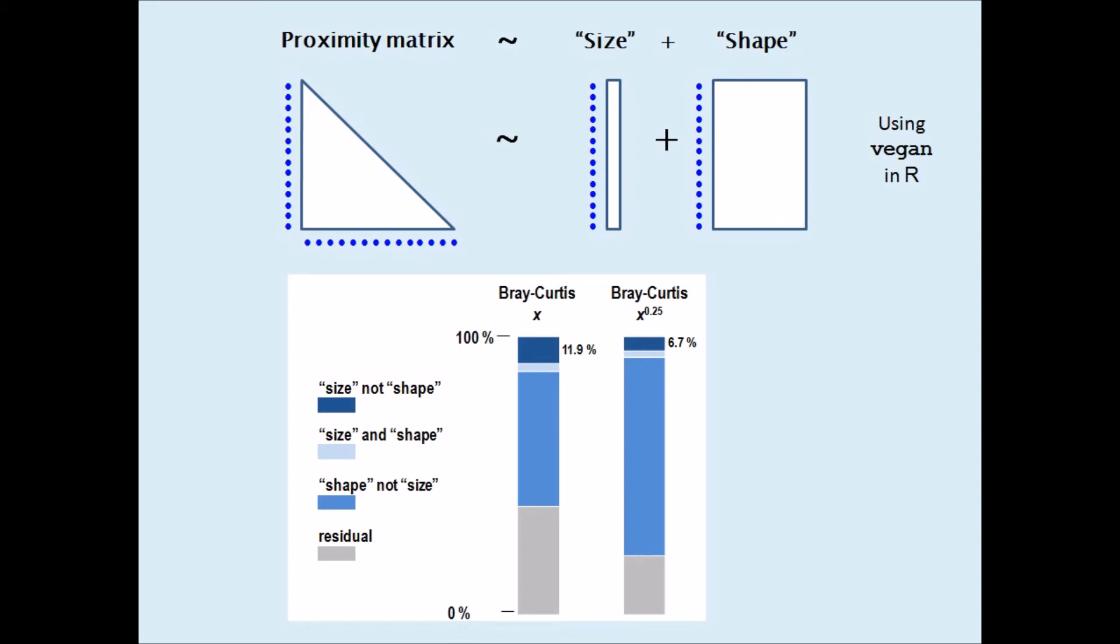The part due to size is reduced to 6.7%, but it is still present. In other words, conclusions about differences between the samples using the Bray-Curtis, for example in a permutation test, would be influenced by the fact that differences in total abundance are being incorporated into these proximities. Finally, when using a proximity measure such as the chi-square that operates on relative abundances, the part due to size practically vanishes as expected, so that differences between the samples are just differences in their shapes.